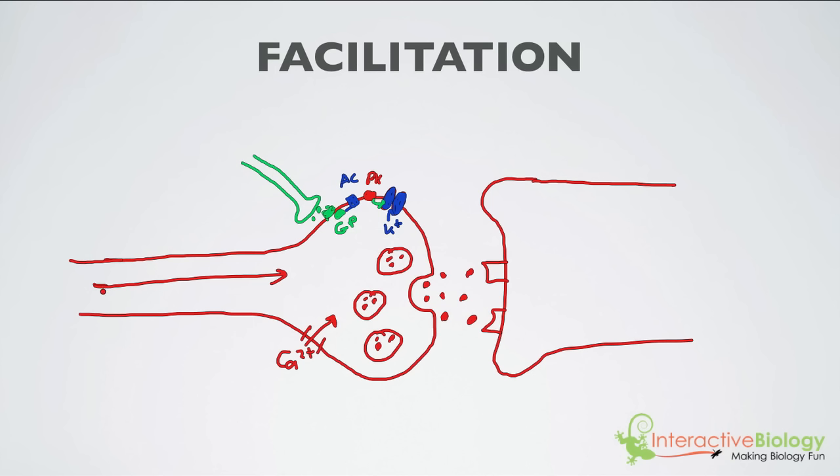As we've mentioned before, when the action potential reaches the axon terminal, it causes voltage-gated calcium channels to open. Calcium ions rush in, and that causes the vesicles to fuse with the membrane, releasing neurotransmitter, causing a signal in the postsynaptic cell.